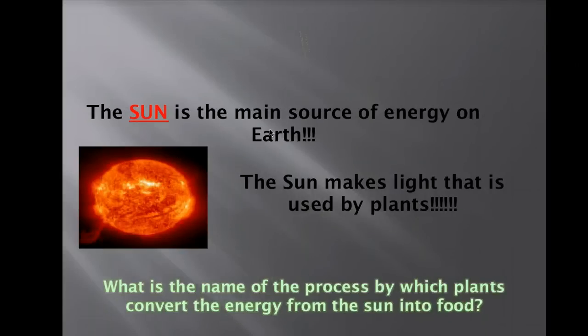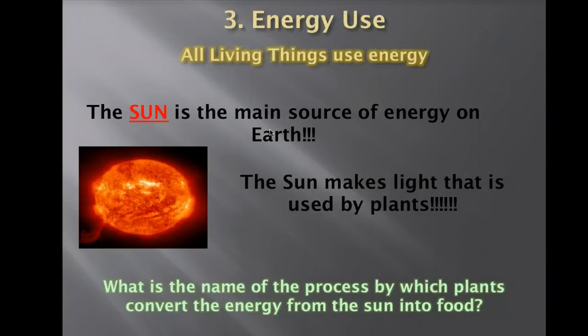The next characteristic is energy use. All living things use energy. The sun is going to be our main source of energy, but all living things are going to have to get energy from some source. For plants, they get energy from the sun, and the process used to convert energy from the sun into food for plants is called photosynthesis.